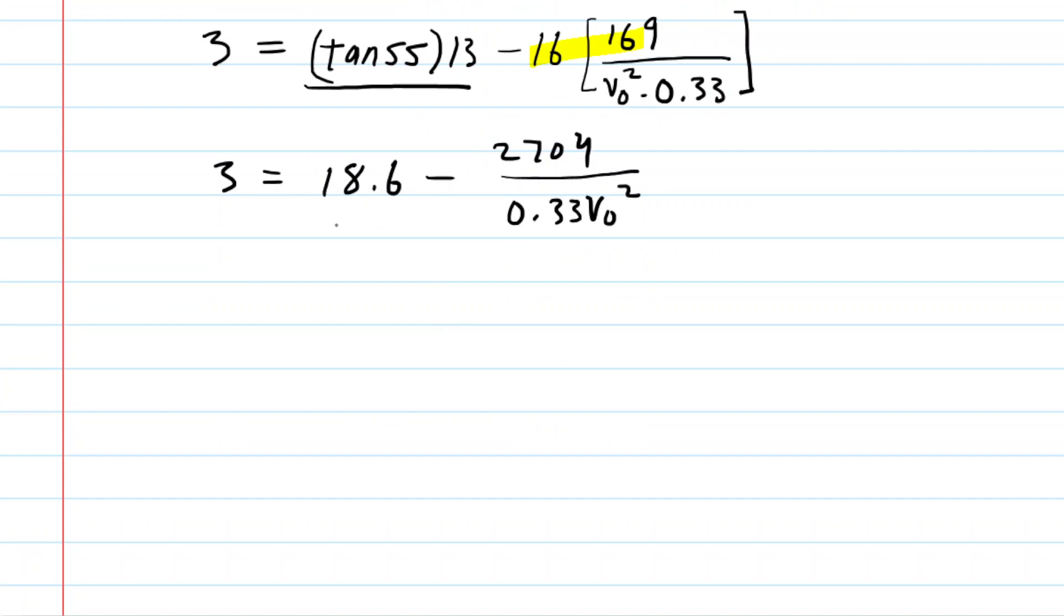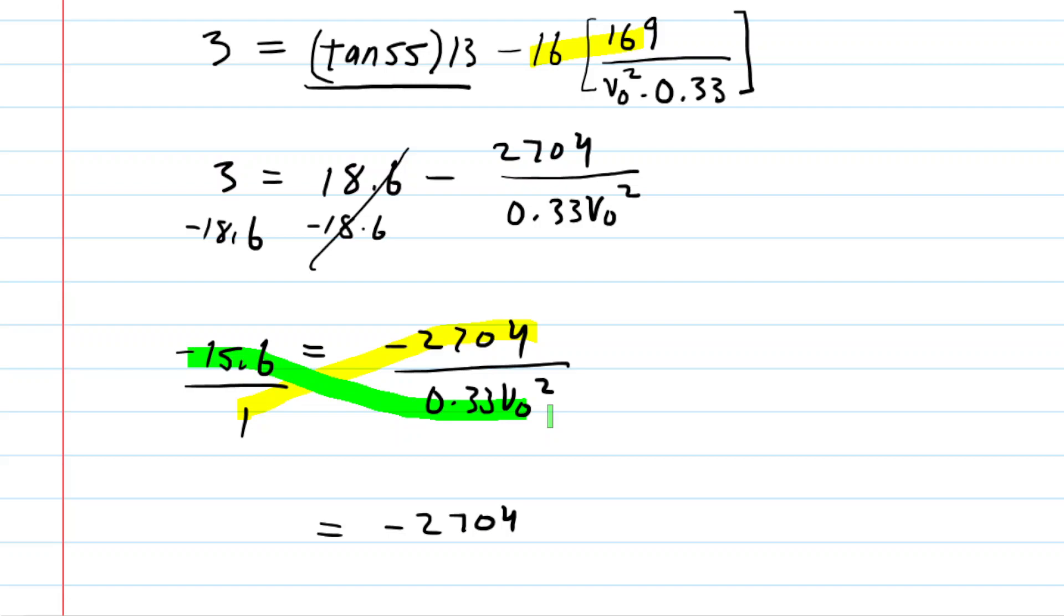Let's subtract 18.6 from both sides of this equation, canceling it on the right side. We now have negative 15.6 is equal to negative 2704 over that denominator. Next, we could put this over a 1 and then just cross multiply. So when we multiply that way, we're going to get negative 2704. And when we multiply the other way, what you probably would want to do is multiply the negative 15.6 by that 0.33. And you'll get about negative 5.14, roughly. So now you have negative 5.14 times v-naught squared.